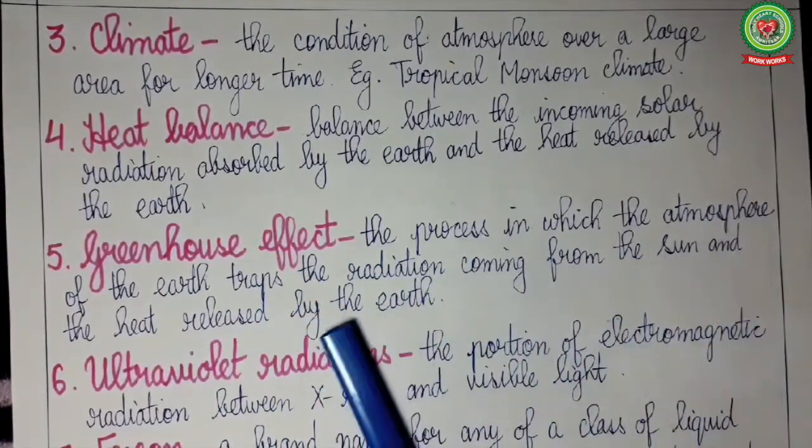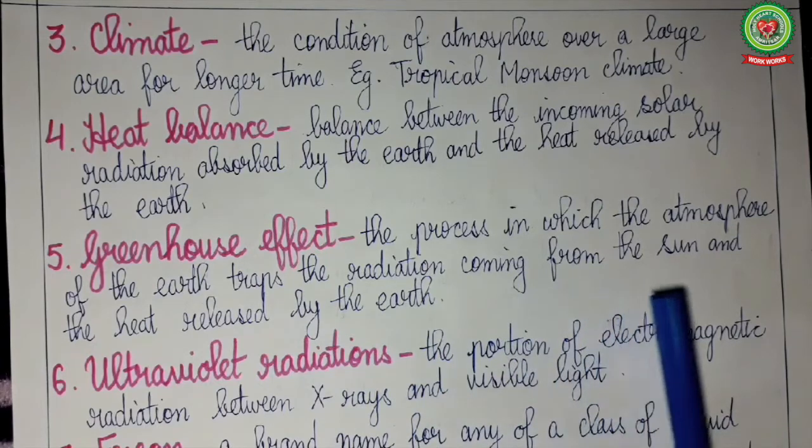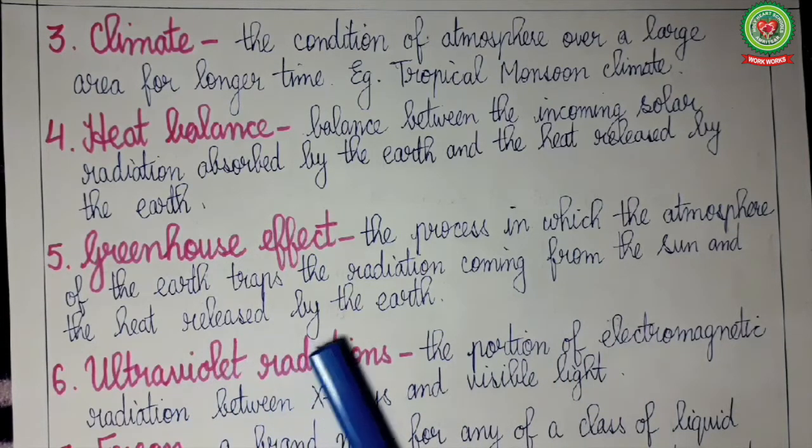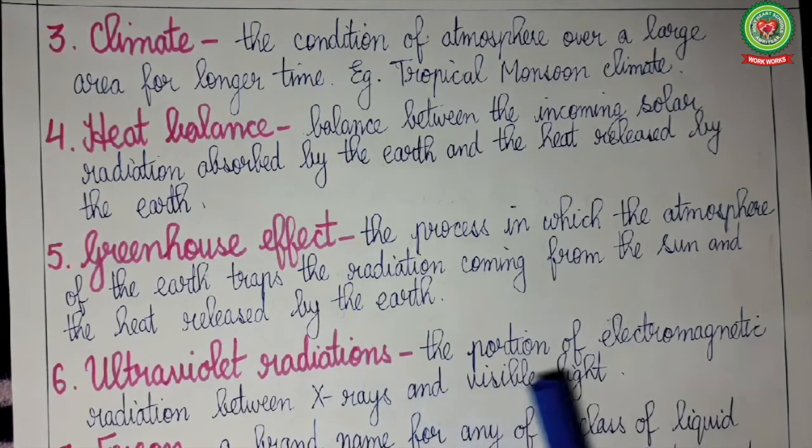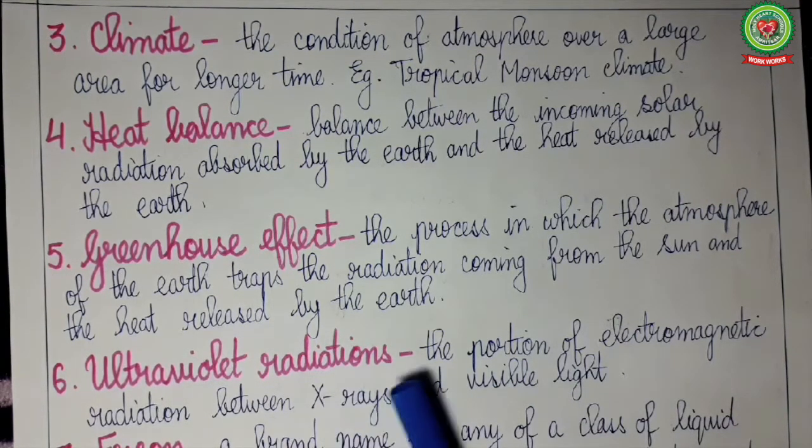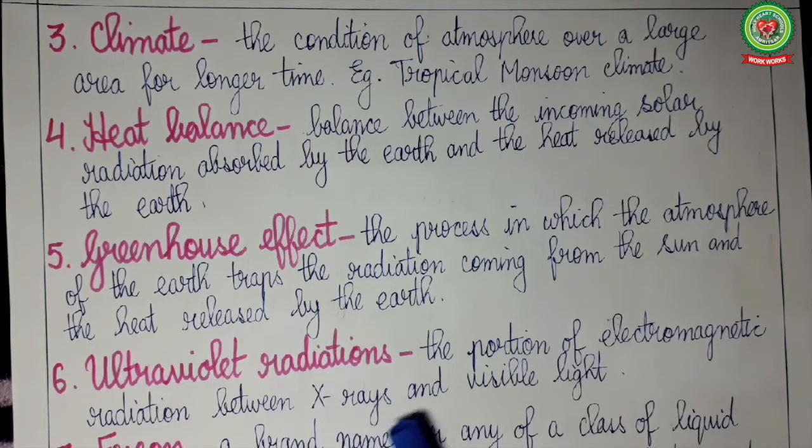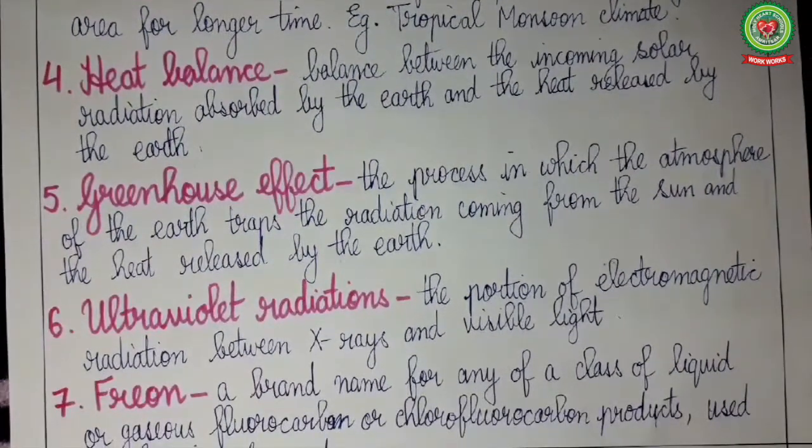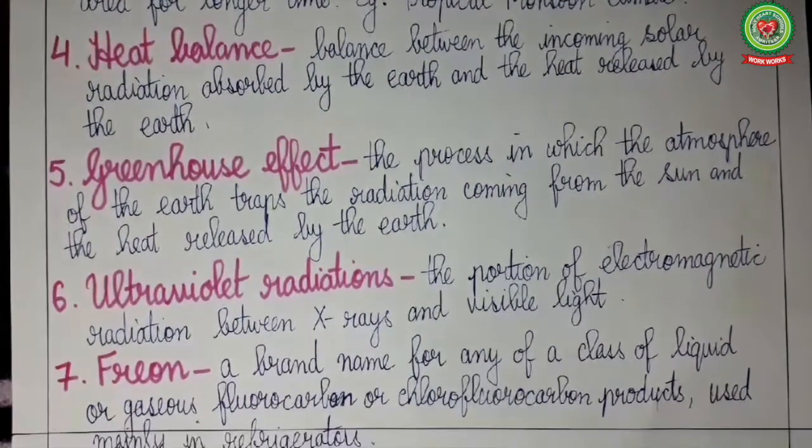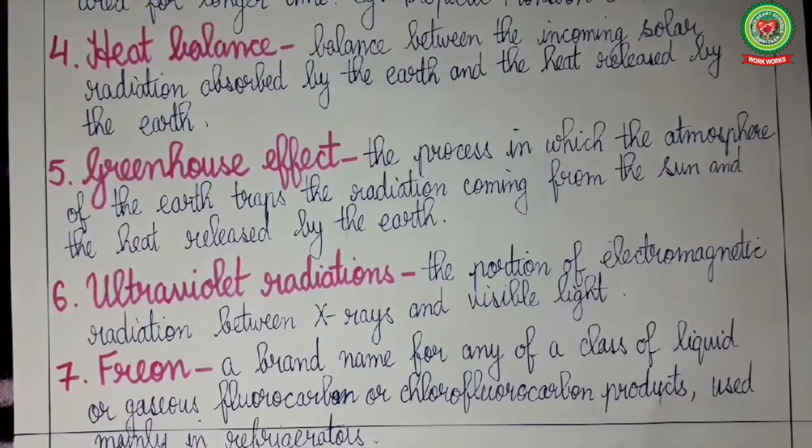Greenhouse effect: the process in which the atmosphere of the earth traps the radiation coming from the sun and the heat released by the earth. Ultraviolet radiation: the portion of electromagnetic radiation that lies between x-rays and visible light. Freon is a brand name for any of a class of liquid or gaseous fluorocarbon or chlorofluorocarbon products used mainly in refrigerators.